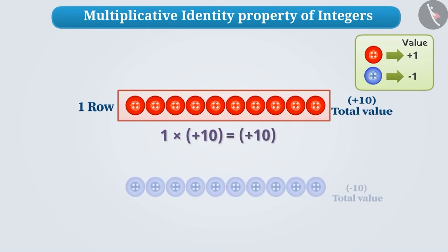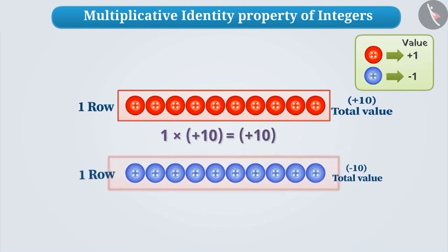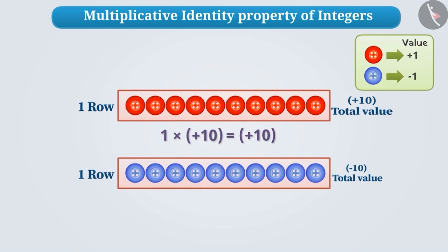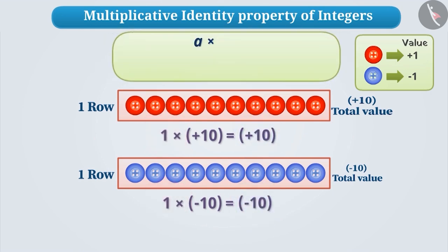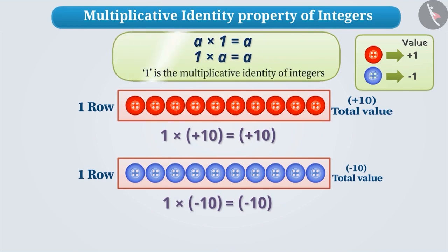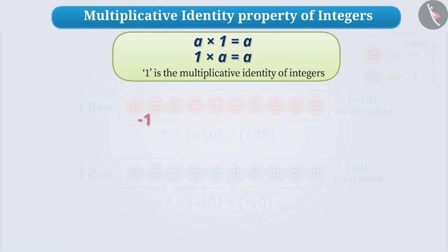Similarly, if we take 10 blue buttons and arrange them in a row, then its value can be found like this: 1 into minus 10, which is minus 10. By doing this, you can understand that any integer multiplied by 1 gives the same integer. In general form, a into 1 is equal to a, and 1 into a is equal to a. Therefore, we can say that 1 is the multiplicative identity of integers.